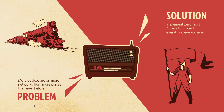The problem is that you have more devices on your network in more places than ever before, which is creating more edges than ever before. The solution is to implement zero-trust access to protect everything everywhere.